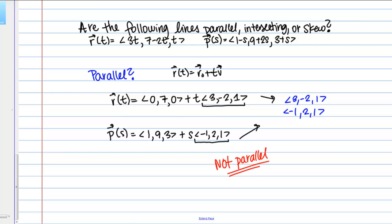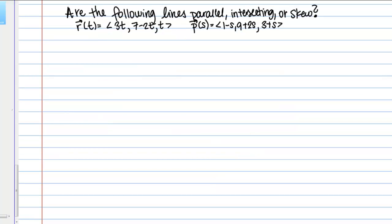Then our next task is going to be to determine if these lines are intersecting. If these lines are intersecting, then basically there should be a pair of t and s values that would make each pair of components equal, so like the x and x components equal, y and y components equal, z and z components equal. Essentially what that does is it gives me a system of equations to solve, and I'm basically just seeing if there is a solution to the system of equations.